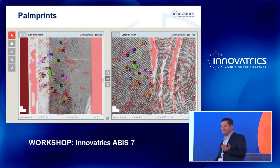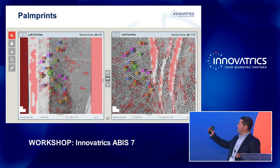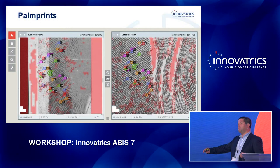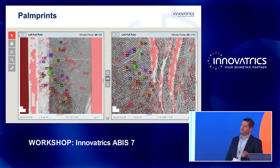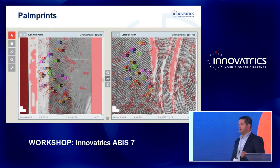With fingerprints, we usually have dozens, maximum 150. If you have rolled fingerprints, we can have around 250. But for a whole palm print, we can have up to 2,000 minutia points, so we have to apply a different approach to reliably identify palm prints.